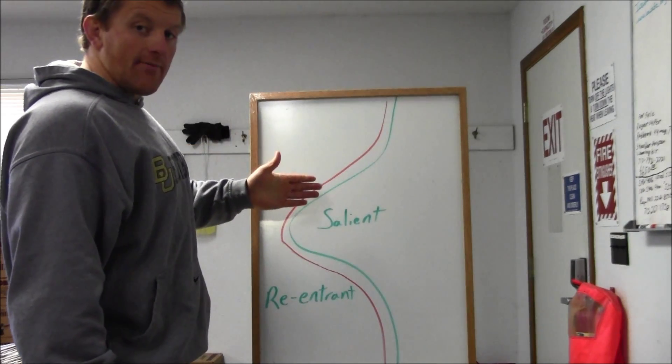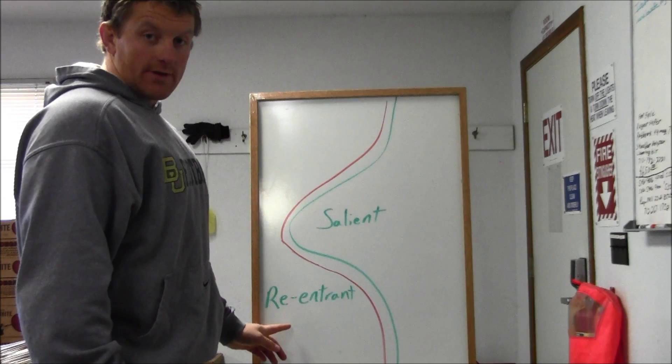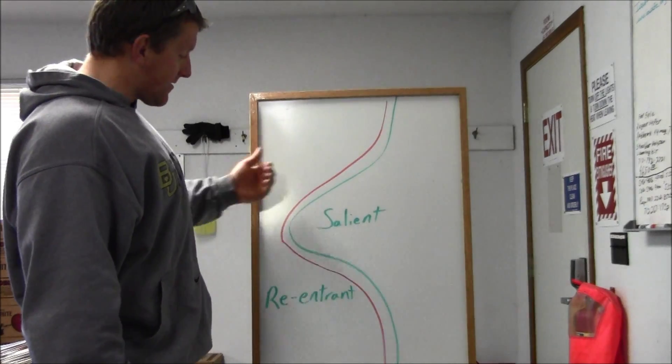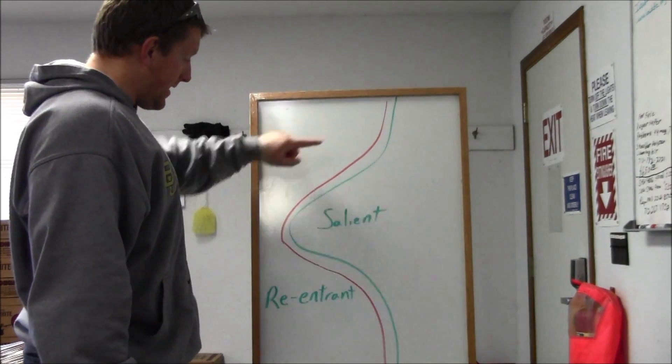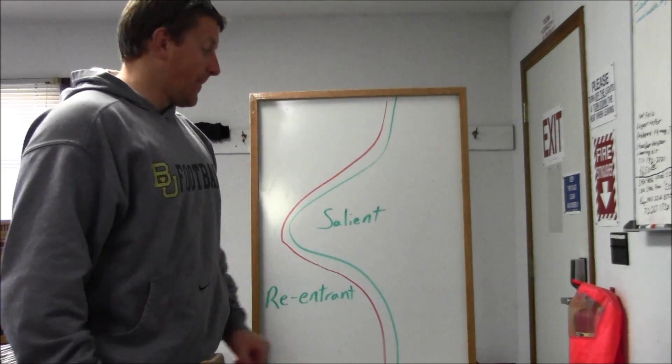The opposite side of that equation is the re-entrant. When you are the side that has the salient pointing into your line, your line is called a re-entrant.